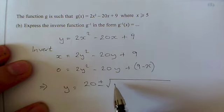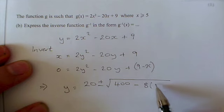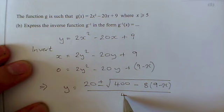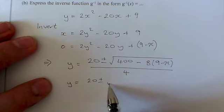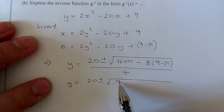If I start filling that in, I've got -b which is +20 ± √(b² which is 400 - 4 × 2 × (9 - x)). If I tidy that up, I'll keep the 20 ± for now. I can do something here: 400 - 72 is 328, and -8 × -x is +8x, all over 4.